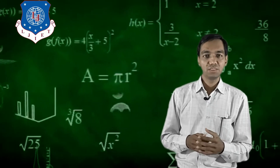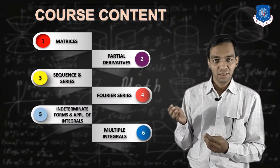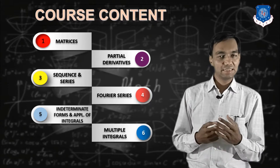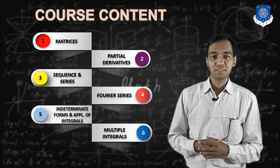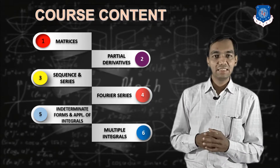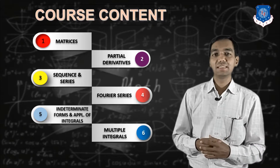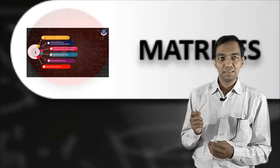We are starting with the content. In the content, there are six units. The first unit is a matrix.